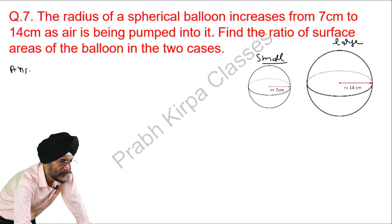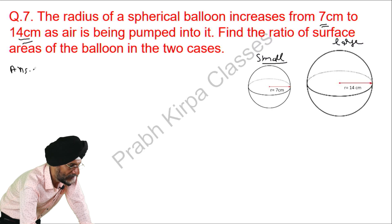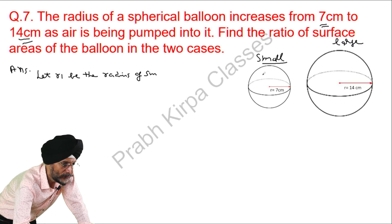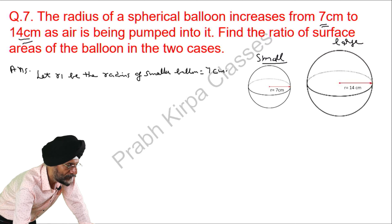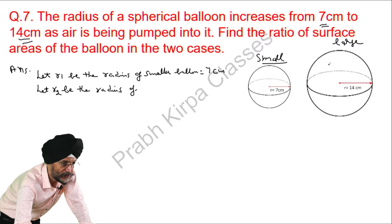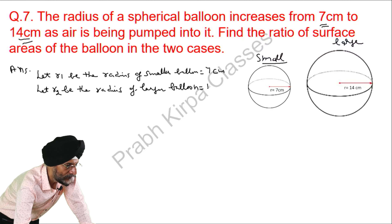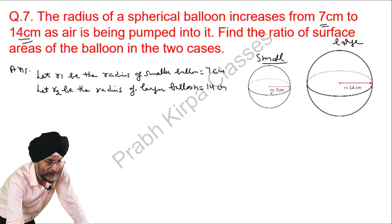Here what has been given is that the radius increases from 7 centimetres to 14 centimetres. So let R1 be the radius of the smaller balloon — R1 is equal to 7 centimetres. Now let R2 be the radius of the larger balloon. So we have taken the radius in the first case as R1 and in the second case as R2.